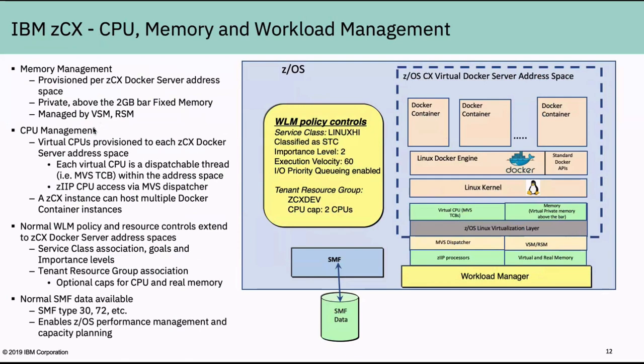Looking at the WLM policy: you could define a service class, classify this address space as a started task, give it a business importance level and an execution velocity goal. You can optionally specify tenant resource groups to cap CPU consumption — for example, a CPU cap of two CPUs would mean that ZCX instance never exceeds two full CPUs worth of processing. Normal SMF data applies in terms of Type 30 records and WLM Type 72 records, because after all it is an address space.